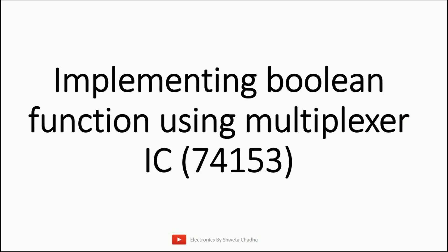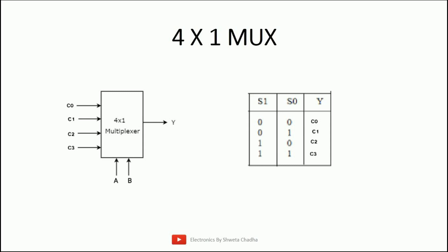In this video I am going to talk about the implementation of a boolean function using the 74153 multiplexer IC. The 74153 IC is a 4-to-1 multiplexer. A 4×1 multiplexer has four input signals C0, C1, C2, and C3, two select lines A and B, and one output signal Y.